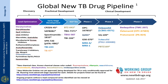Currently there are a number of drugs in the pipeline. Some are in the discovery phase, some in preclinical development, and some in clinical development phases 1, 2, and 3. Looking at newer drugs, bedaquiline, delamanid, and pretomanid are in phase 3 trials and may be available shortly for regular use.